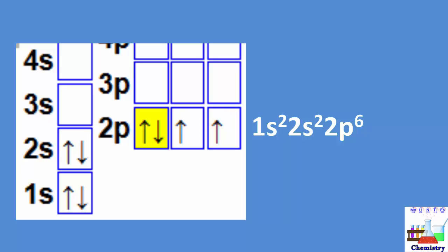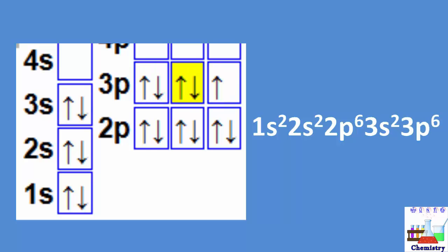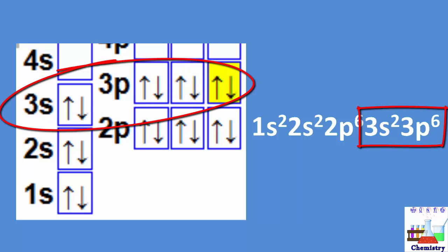This means that all elements' configurations will start the same way. This, combined with the fact that the electrons we're most interested in when it comes to chemical reactivity are the outermost electrons, suggests that abbreviating the configuration might be helpful for a variety of reasons.